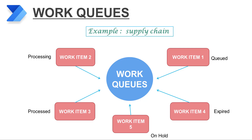Work queues are incredibly powerful and help decouple complex processes and automations by allowing them to communicate asynchronously. These work queues allow each part of the process to operate independently and exchange prioritized inputs and outputs.